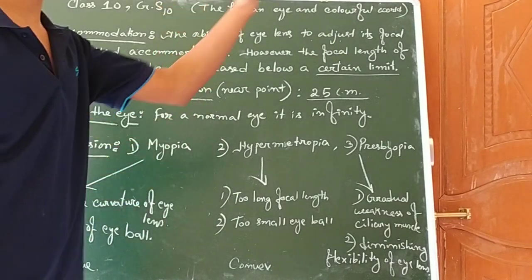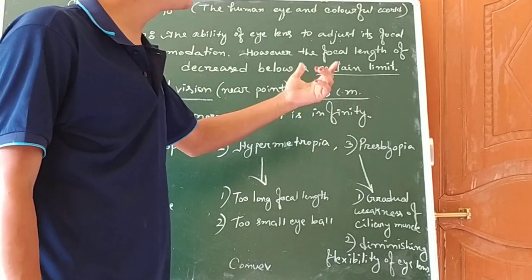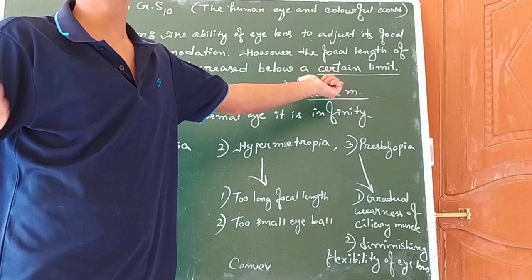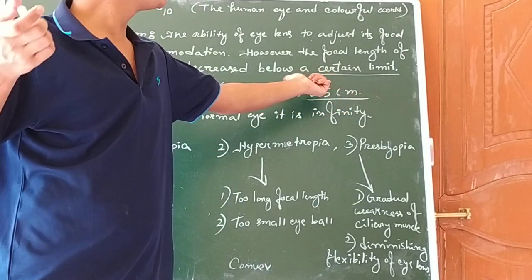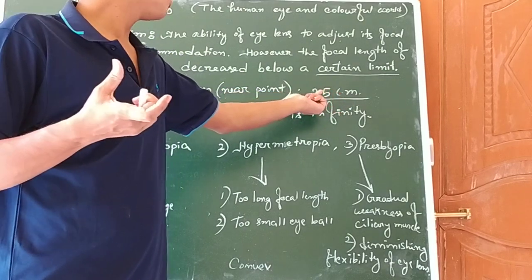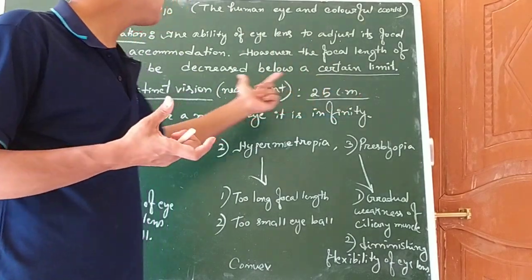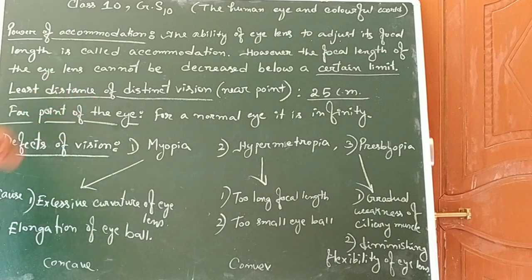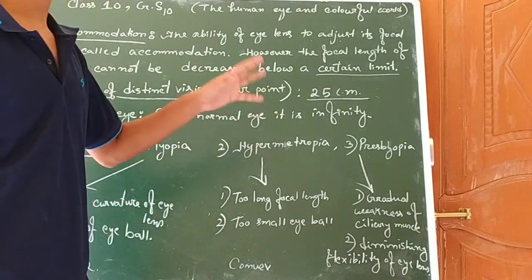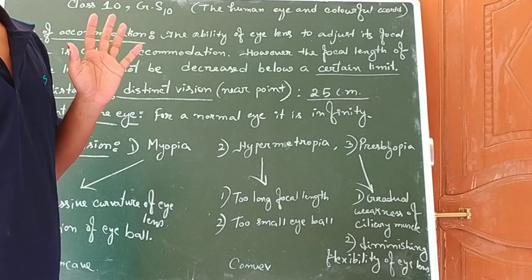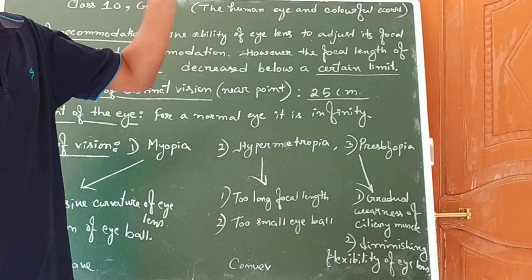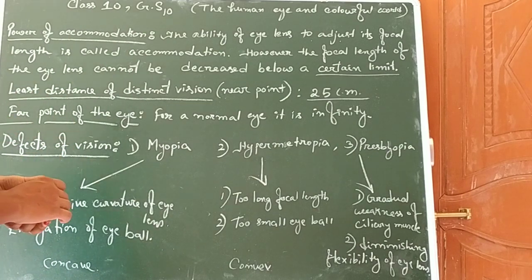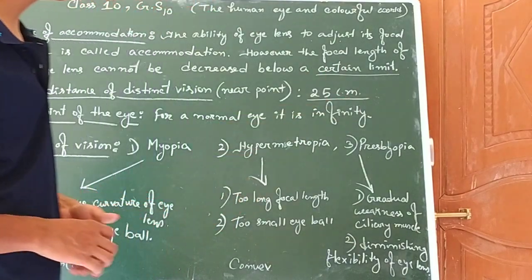The far point of the eye — for a normal eye, it is infinity. We can see an object at infinity, meaning wherever the object is placed, we can see it comfortably. But below 25 centimeters, we cannot see the object distinctly. So 25 centimeters is the near point of a normal eye.